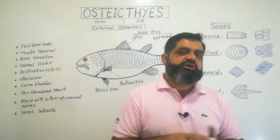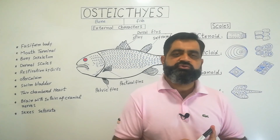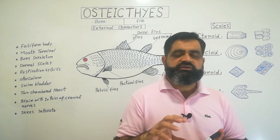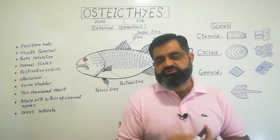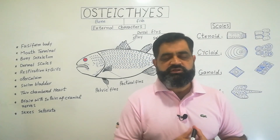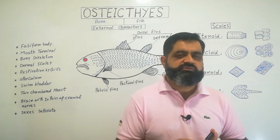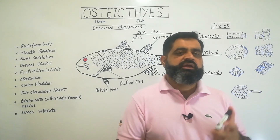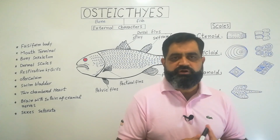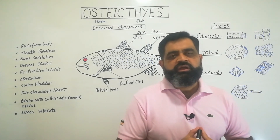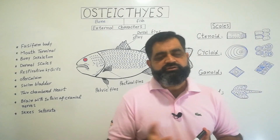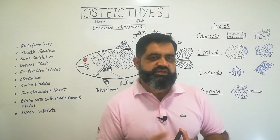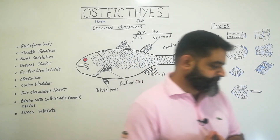That's all for today. We have discussed the general characters and some external features of class Osteichthyes — bony fishes. The next lecture will cover the internal skeleton and different body parts. I hope you have understood this topic. See you in the next lecture.